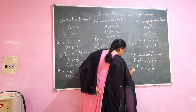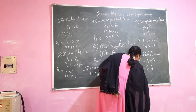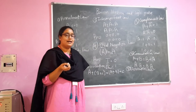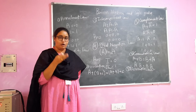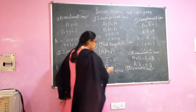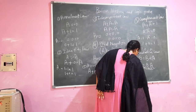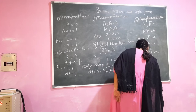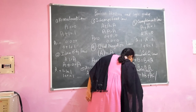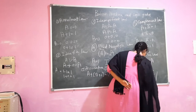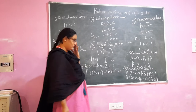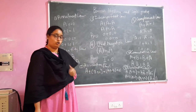Next we will see the distributive law. In this law, we take three variables and between them we perform the OR and AND operations, and we can say that the LHS and RHS would be the same. We distribute the variables and apply the OR operation.